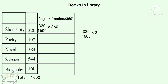The denominator zeros cancel. 320 is 16 into 2, so this becomes 16 into 2 by 16 into 36. The denominator 16s cancel. 2 into 36 is 72. So the angle of Short Story is 72 degrees.